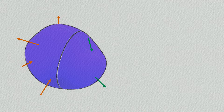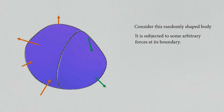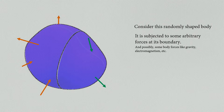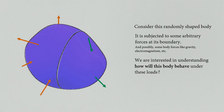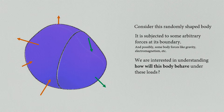Consider this solid body — some randomly shaped solid body — which is subjected to some arbitrary set of forces. It is also possibly subjected to body forces like gravitational or electromagnetic forces. What we want to do is understand how this body will behave under these loads. For this series of videos we'll consider that the body is in a state of equilibrium and it doesn't move in space with respect to time.